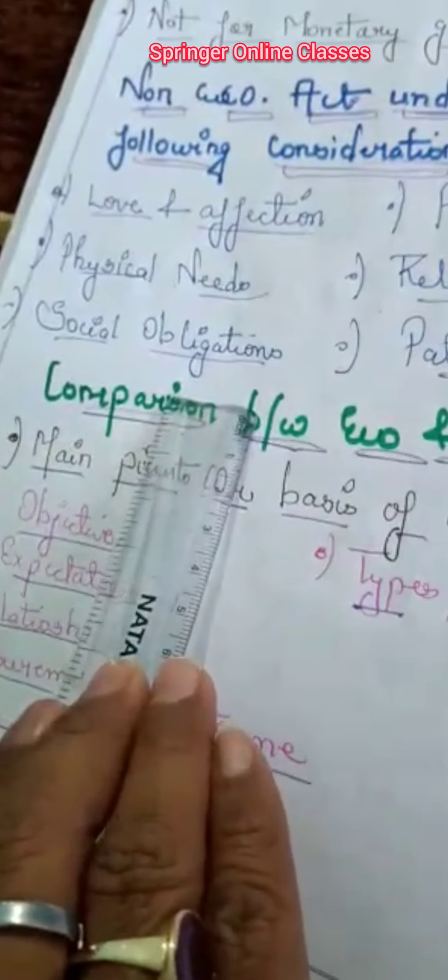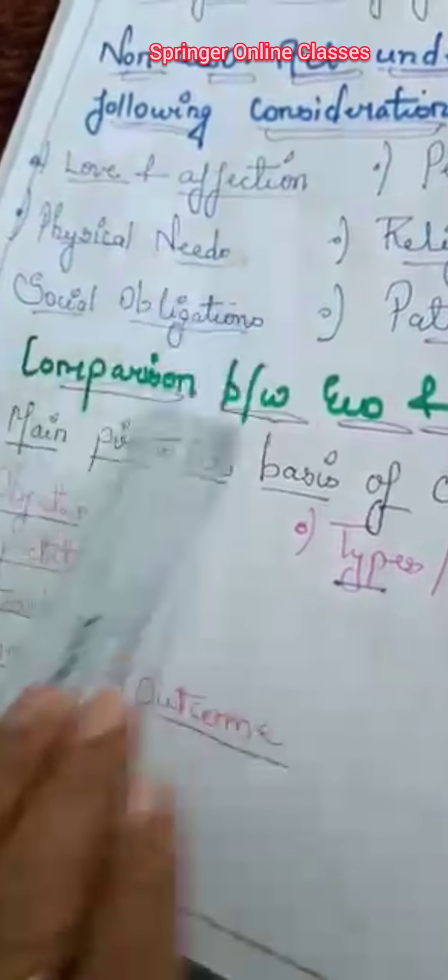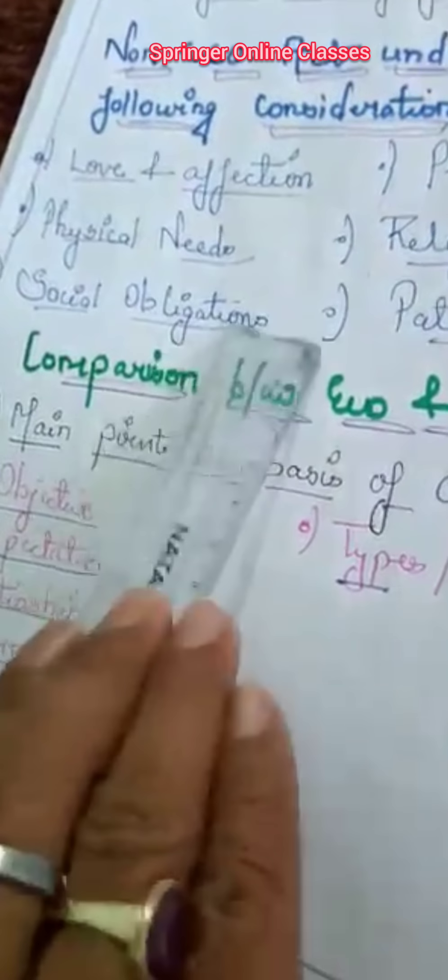Social Obligation — we take all resources from society, so we are obliged to do something for the society, and this is not for earning money. Patriotism — we donate something or do something for our country, such as donating blood for army men or contributing funds for charity purposes in the Prime Ministerial fund.